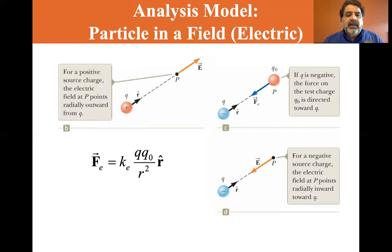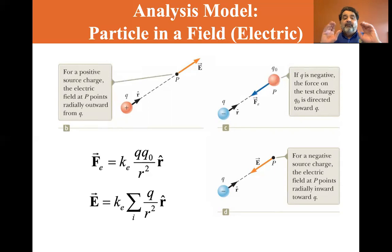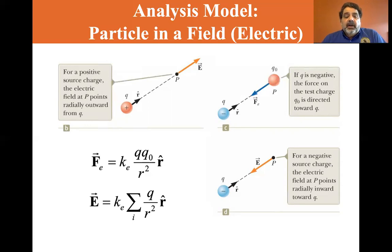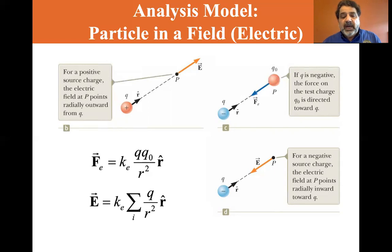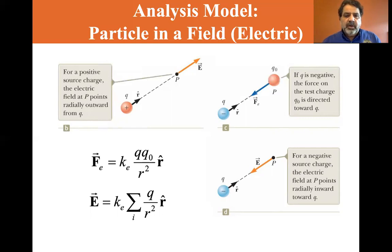Here's Coulomb's law: F_e = k_e · q · q₀ / r², along the direction of unit vector r̂. Now, if you have more than one charge, E is simply the sum of contributions from all the charges. Each charge q_i is at a different location with a different r_i in the denominator r², and the r̂ direction changes for each — but you just take the vector sum.